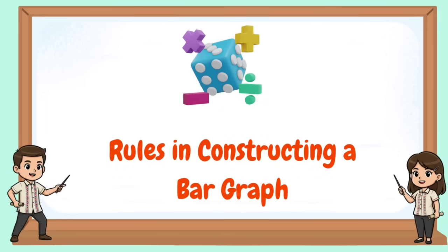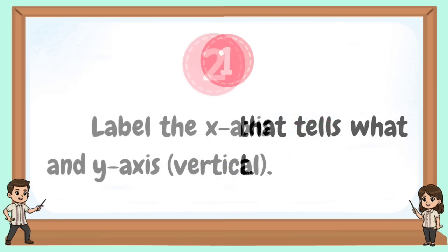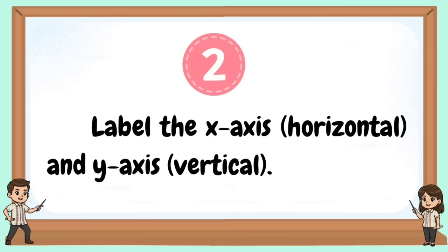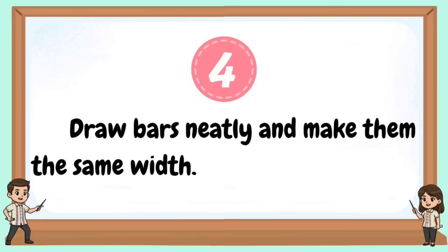Rules in constructing a bar graph: First, write a title that tells us what the graph is about. Second, label the x-axis (horizontal) and the y-axis (vertical). Third, choose a scale that fits the data.